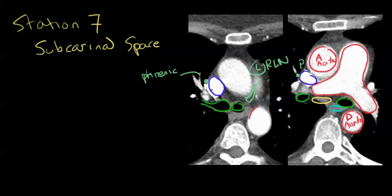You've got descending aorta and ascending aorta. Right about here you can see your mammaries — here's your right mammary and here's your left mammary. And, of course, the sternum here, and on the backside is going to be the spine.